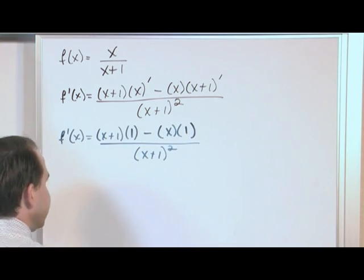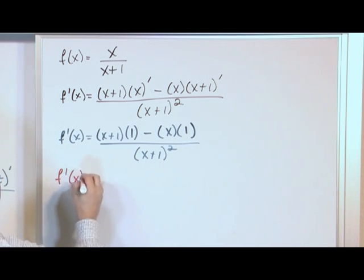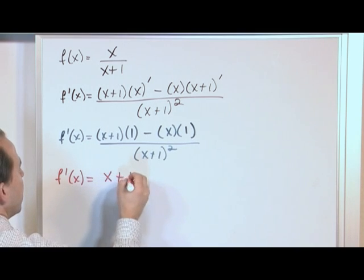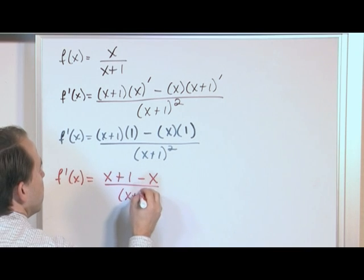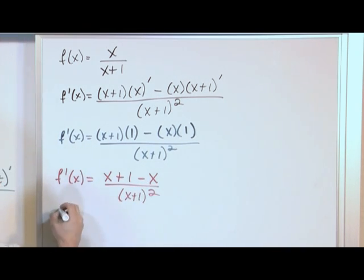So now we're getting basically down to the answer at this point. So what we'll have is f'(x) equals - this is just multiplied by 1 - so on the top I'll have x plus 1 minus x over x plus 1 squared. And so I'm finally ready to write the answer down.